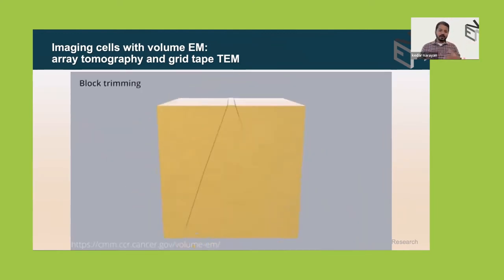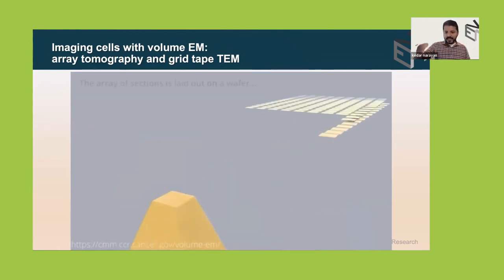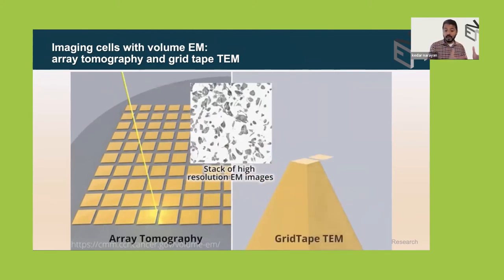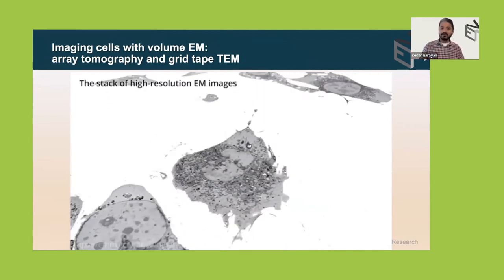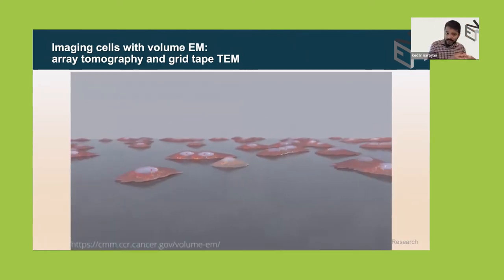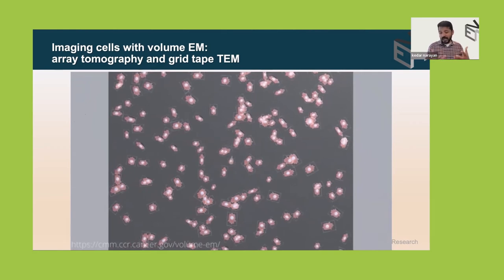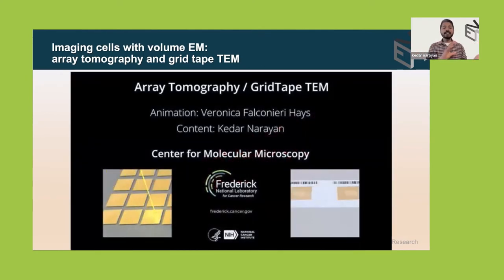You then trim the block in which the cells are embedded to about a millimeter across. With array tomography you do very thin serial sectioning, put those sections on a wafer, and image them in the SEM. Alternatively, you can do the automated serial sectioning, put it on a grid tape, and image by TEM — either way you get a stack of high-resolution 2D EM images which you can align, segment, and use to capture not just one cell but an entire field of cells.